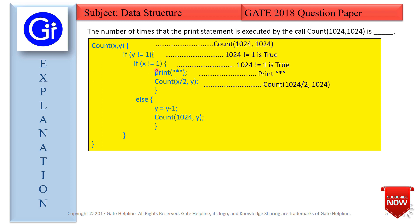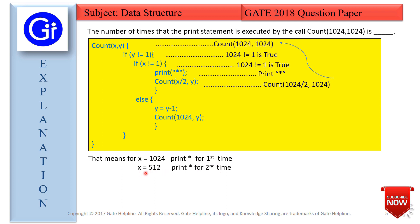The print statement keeps executing until x equals 1. When x equals 1, the condition x ≠ 1 becomes false, so we go to the else part. We keep halving: 1024, 512, 256, ..., 2, and then count(2/2, 1024) = count(1, 1024). Now x = 1, so x ≠ 1 is false and we enter the else block.